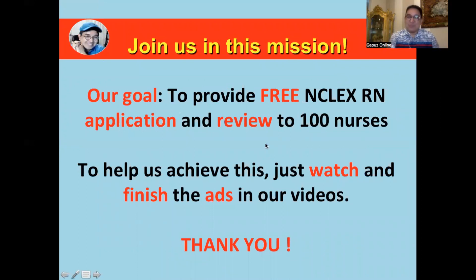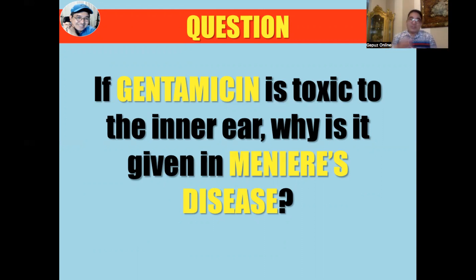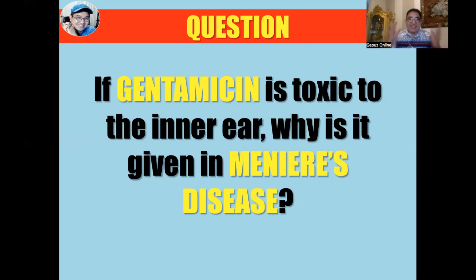So let's go back to the question: if gentamicin is toxic to the inner ear, why is it given in Meniere's disease? Literature usually says the exact cause of Meniere's disease is unknown, though some believe it could be associated with autoimmune conditions. There are three common manifestations: vertigo — where the patient experiences spinning or rotating motion — tinnitus, and of course hearing loss.